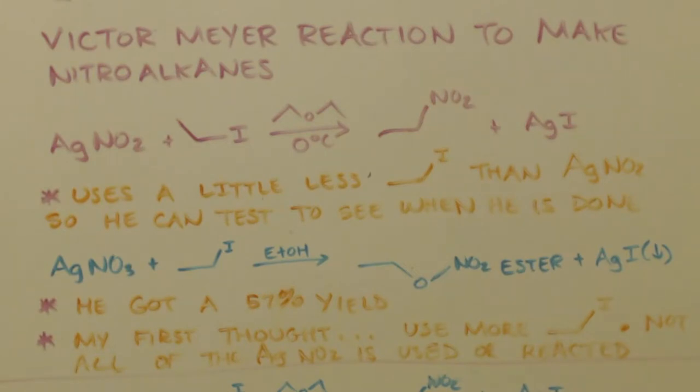He's going to get some silver nitrate and some ethanol, and if there's any ethyl iodide in there, it will make an ester, a nitrate ester, and also silver iodide, which will precipitate out. So when he tests it, if anything precipitates out, he knows there's still ethyl iodide in there, and the reaction isn't done. He got a 57% yield. My first thought with that low yield is add some more ethyl iodide. You're not using all your silver nitrite up.